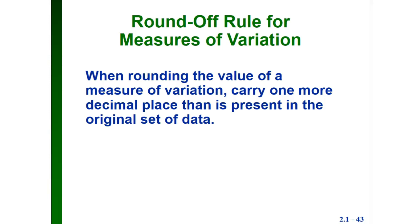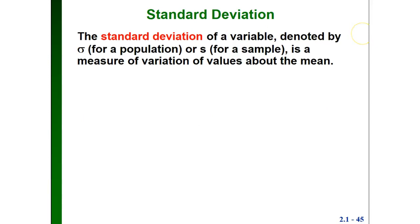The round-off rule for measures of variation is the same as for measures of center: you round to one more decimal place than what you have in the original data set. The standard deviation is a measure of variation of values about the mean.